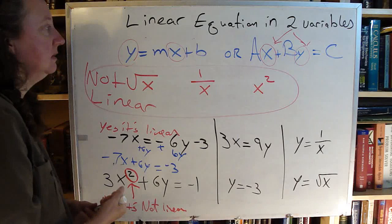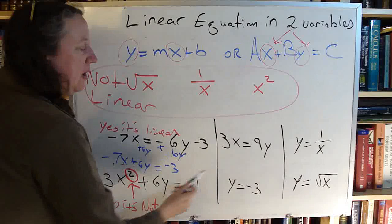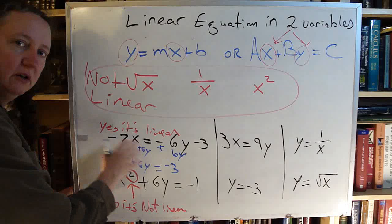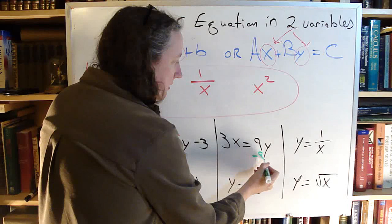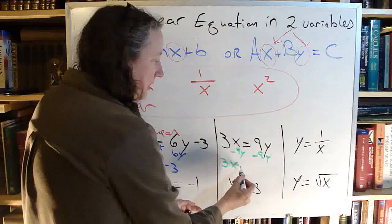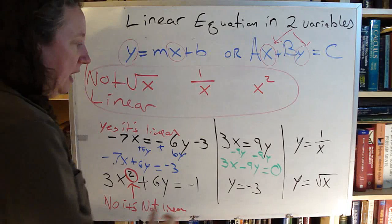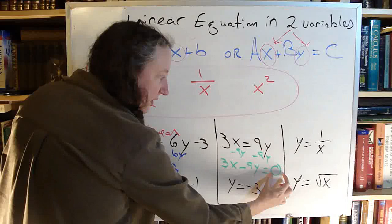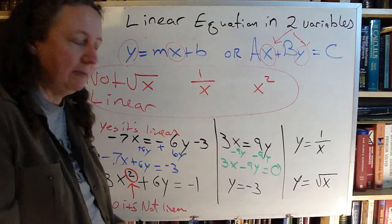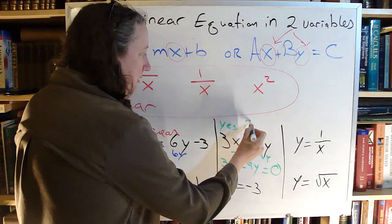Looking over at the next one. 3x equals 9y. So does this look like that? Not quite, no. Does it look like that? No, but I could use the same method that I did over here to make it look like that. I'm going to subtract my 9y over. So now I have 3x minus 9y equals 0. So now I can identify that a is 3, b is negative 9, and c is 0. And that does look like that. There's nothing extra, there's nothing missing. So yes, this one is linear.